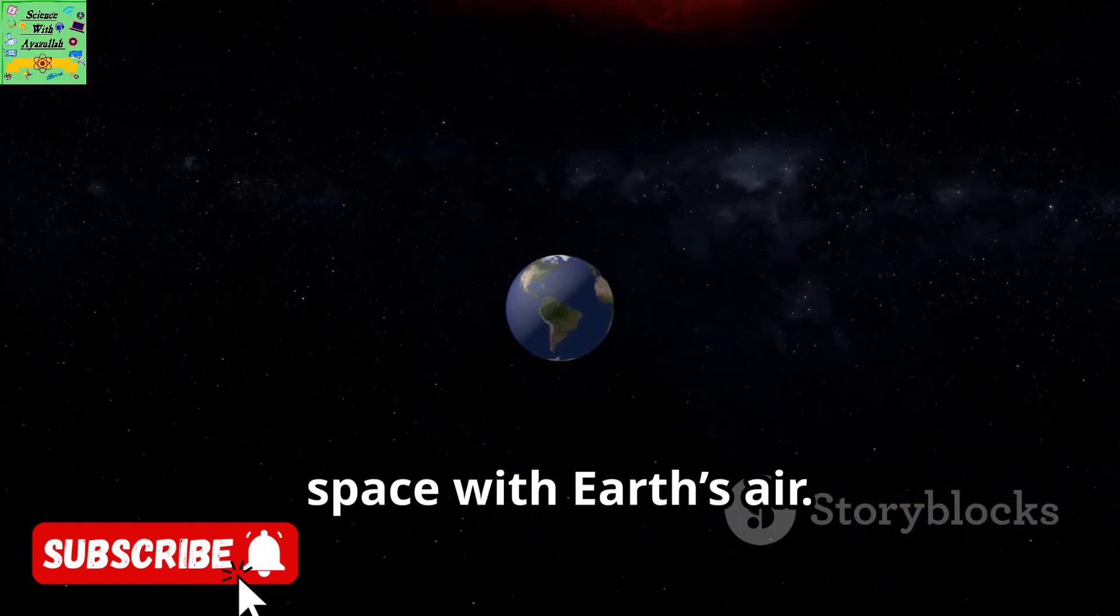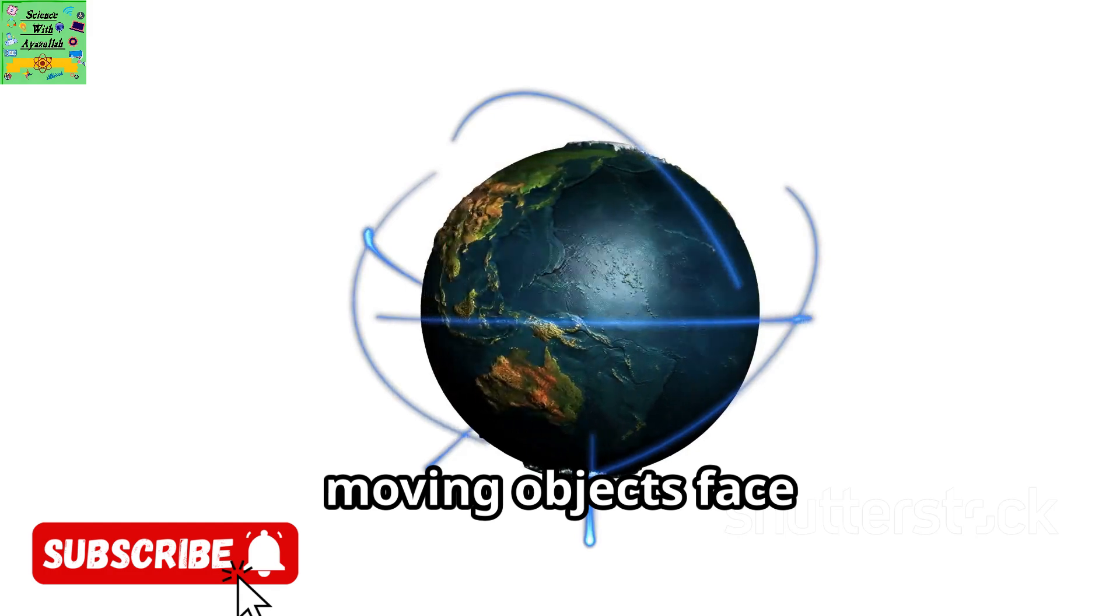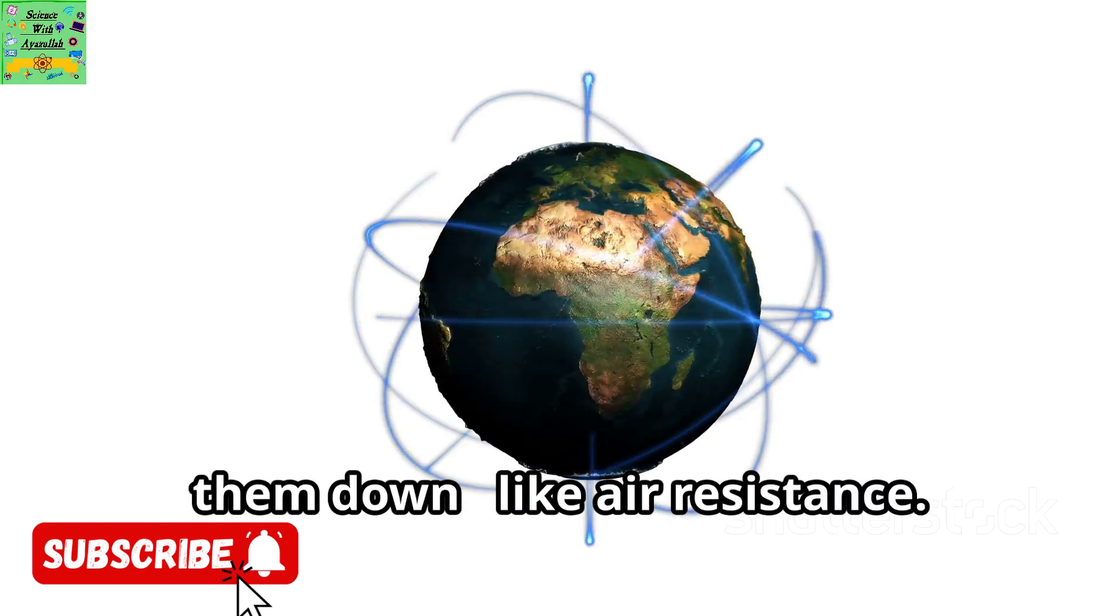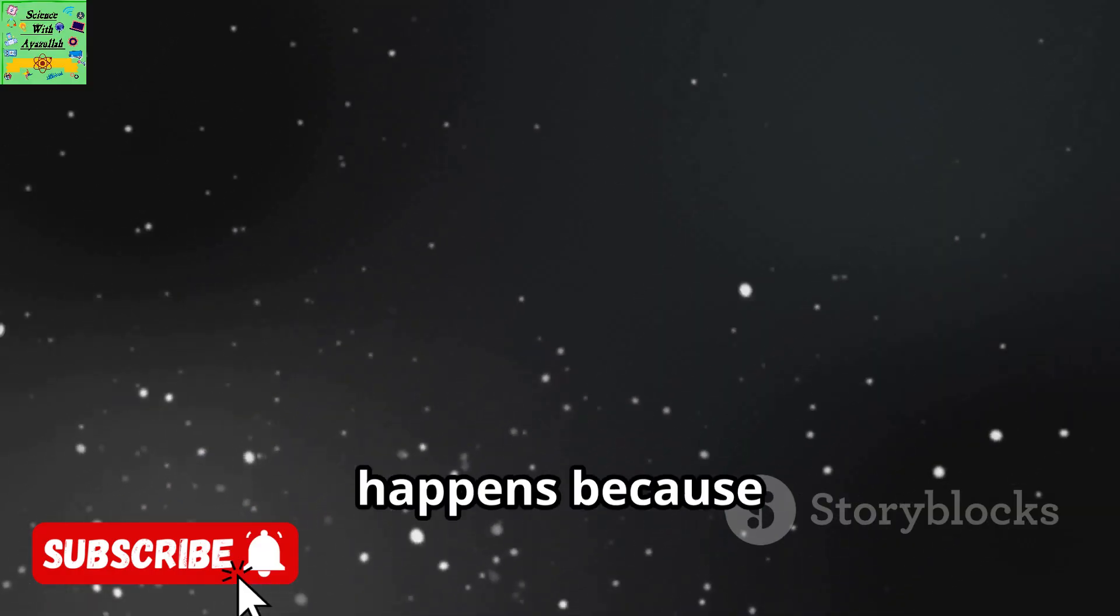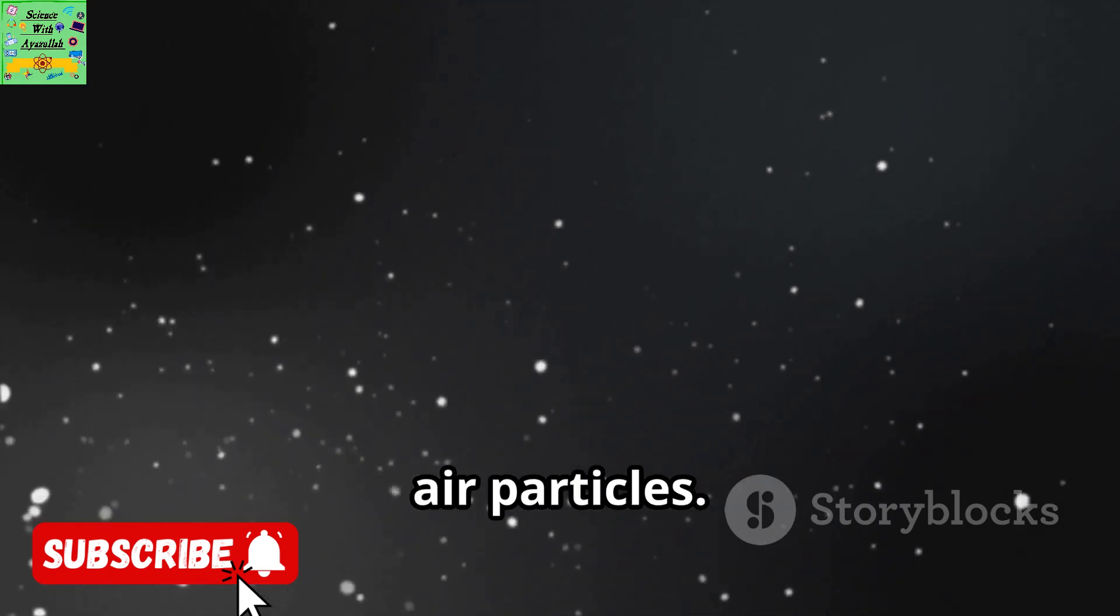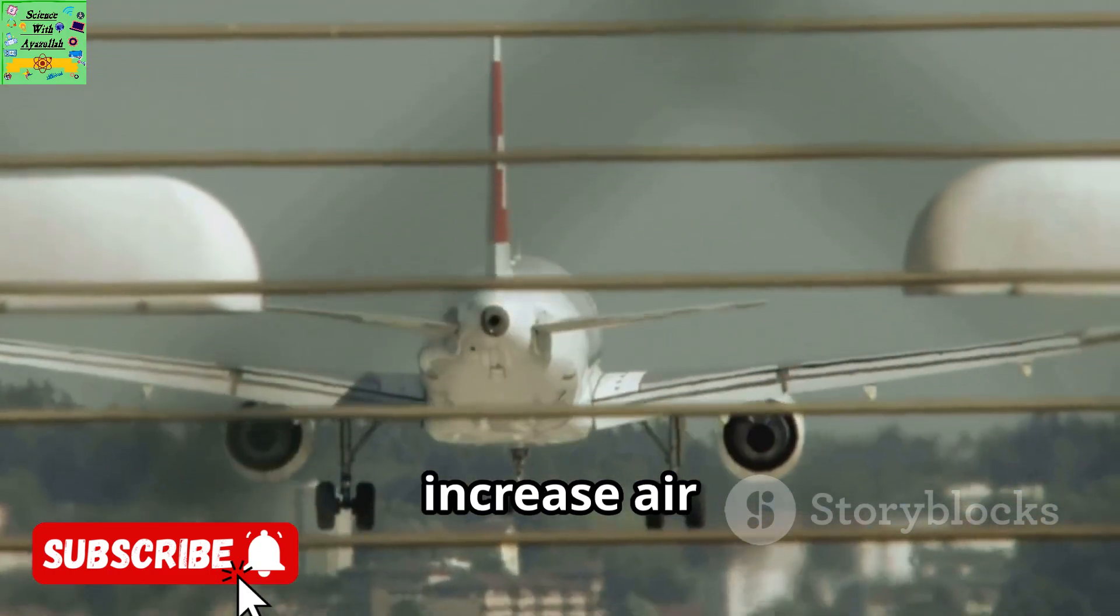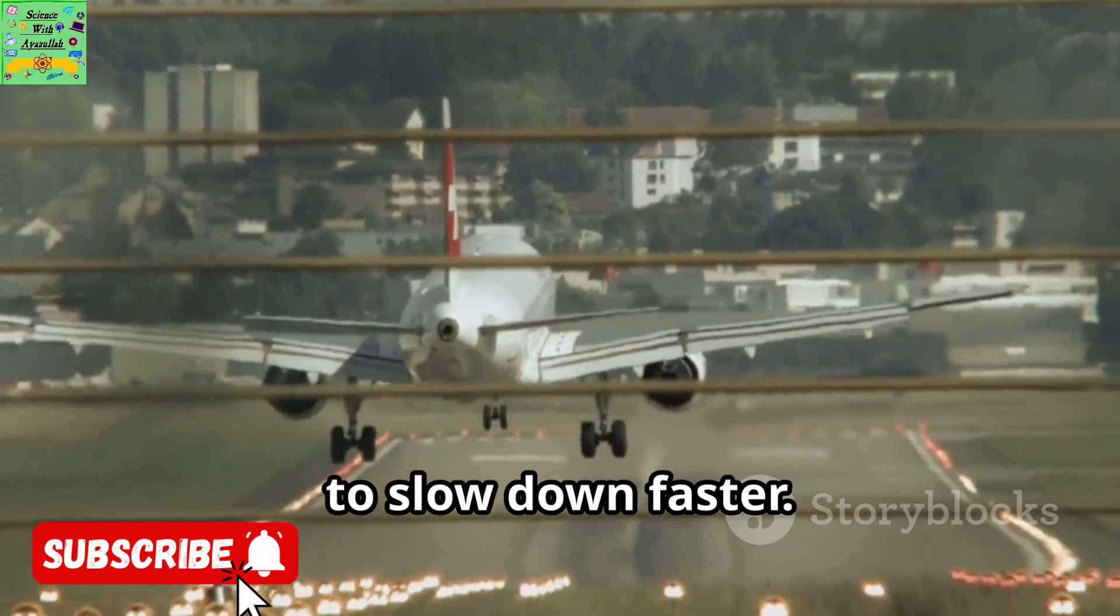Now let's compare space with Earth's air. On Earth, moving objects face forces that slow them down, like air resistance. Air resistance happens because objects push against air particles.